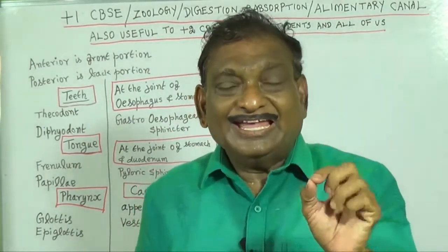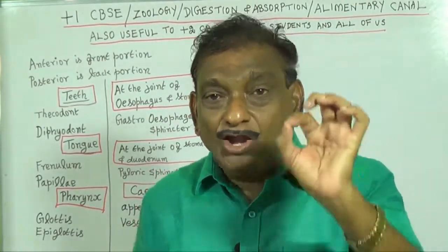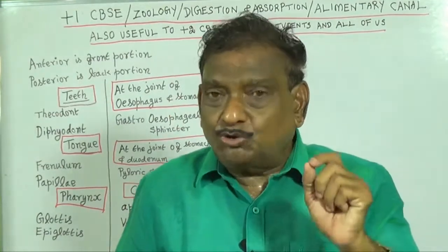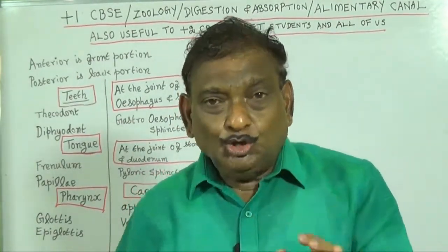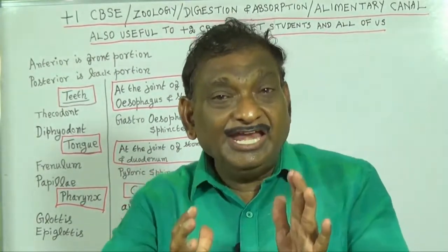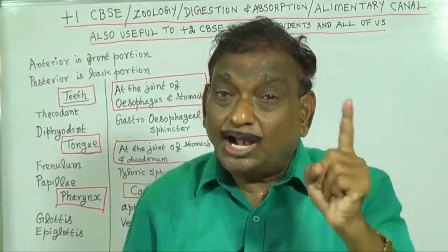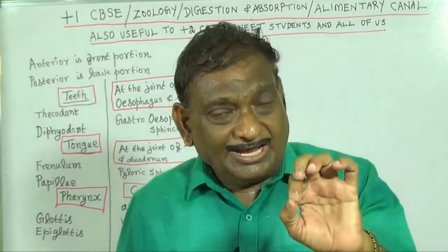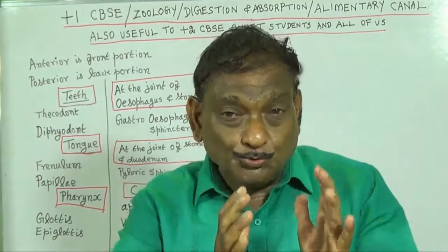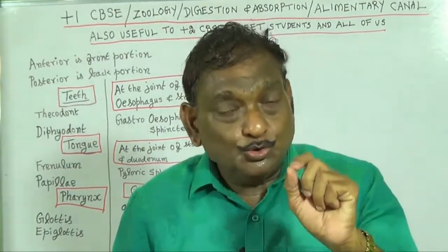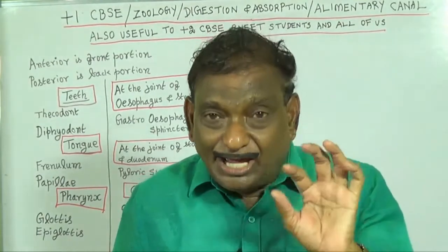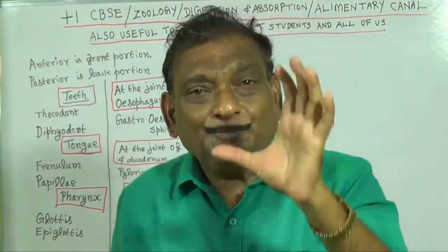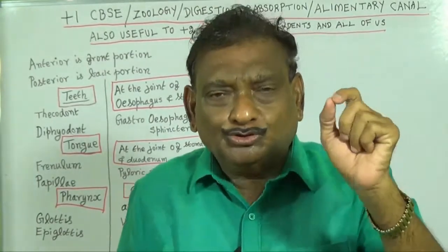The second layer of the alimentary canal wall is the muscularis. This muscularis is made up of smooth muscles, usually arranged as an inner circular layer and an outer longitudinal layer. The third layer, the submucosal layer, is made up of loose connective tissue. This connective tissue has nerves, blood vessels, and lymph vessels. In the duodenum portion of the submucosa, glands are present.